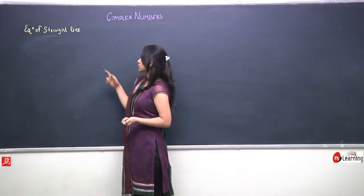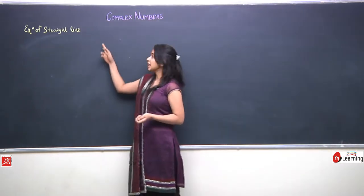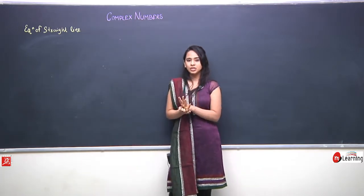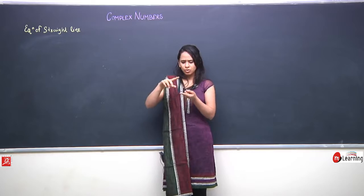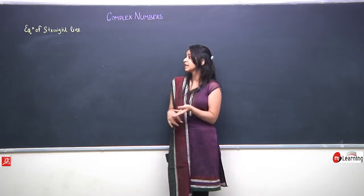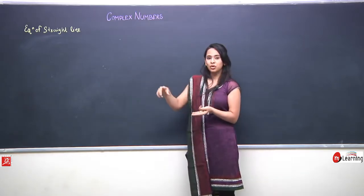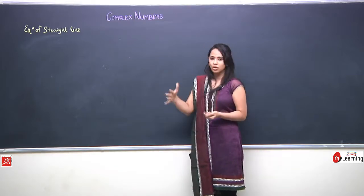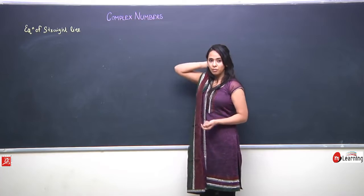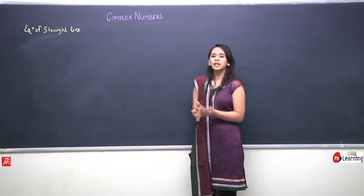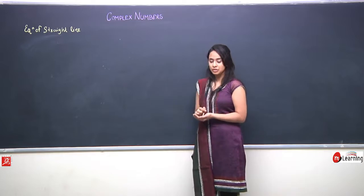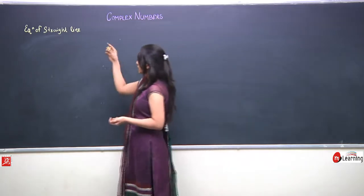The next topic we are going to start is how we can find the equation of a straight line in case of complex numbers. We already know how to find the equation of a straight line for real numbers — parametric equation, non-parametric equation, condition for collinearity, area of a triangle, and many more properties. We are going to derive all these properties even in case of complex numbers, and we will discover that most properties resemble those for real numbers.